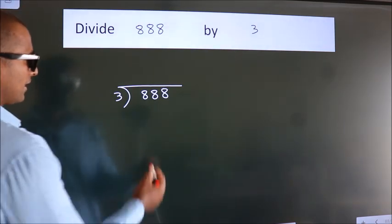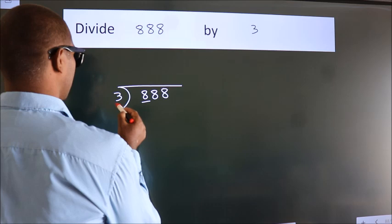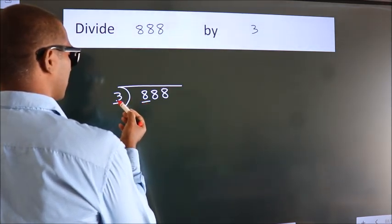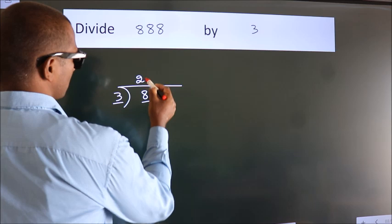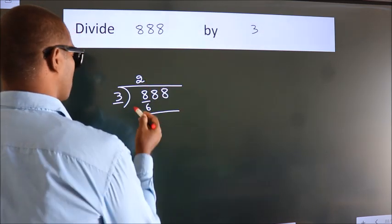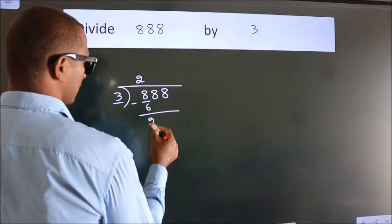Next, here we have 8, here 3. A number close to 8 in the 3 table is 3 twos, 6. Now we should subtract. We get 2.